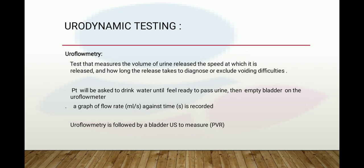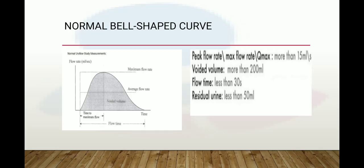Uroflowmetry is a test that measures the volume of urine released, the speed at which it is released, and how long the release takes — to diagnose or exclude voiding difficulties. The patient is asked to drink water until ready to pass urine, then empties the bladder on the uroflowmeter, and a graph of flow rate in ml per second against time is recorded. Uroflowmetry is followed by bladder ultrasound to measure the post-void residual volume.